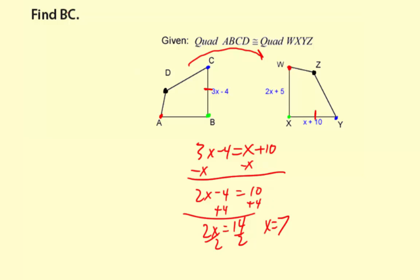Okay, now the question is asking to find BC. Now, 7 isn't BC. 7 is the unknown variable X. But BC is 3X minus 4. So, I'm going to apply that 7 and substitute for X. So, it's 3 times 7 minus 4. And then I can just simplify BC. 3 times 7 is 21, then minus 4. So, BC is 21 minus 4, which is 17.